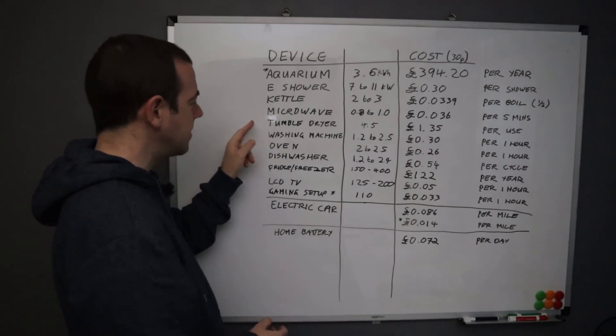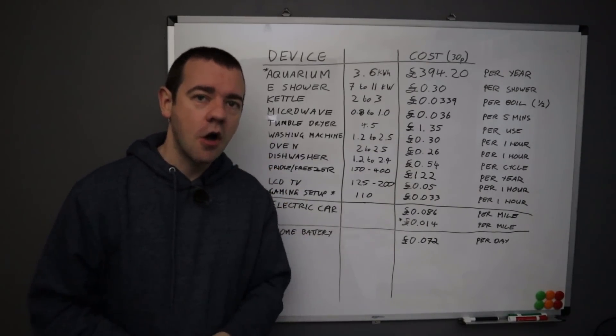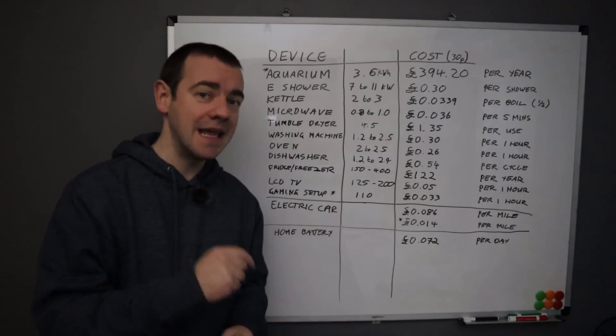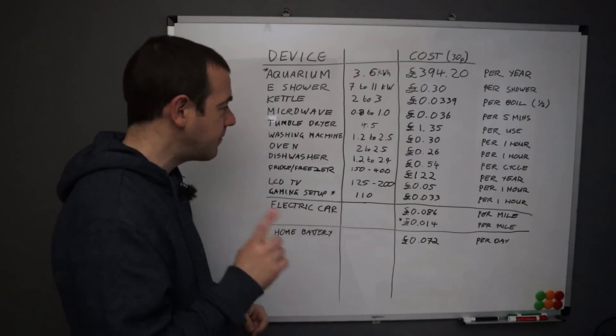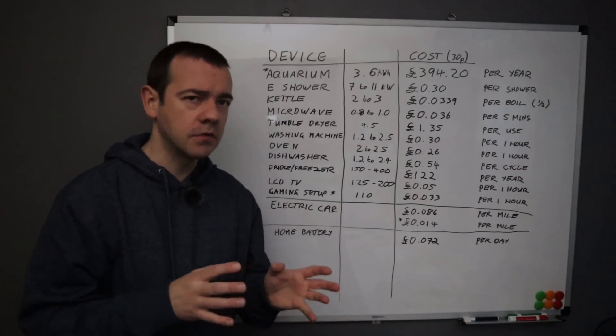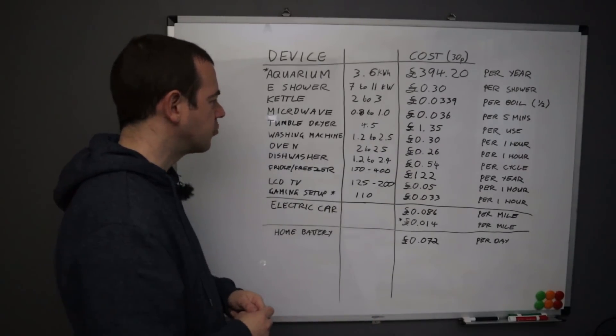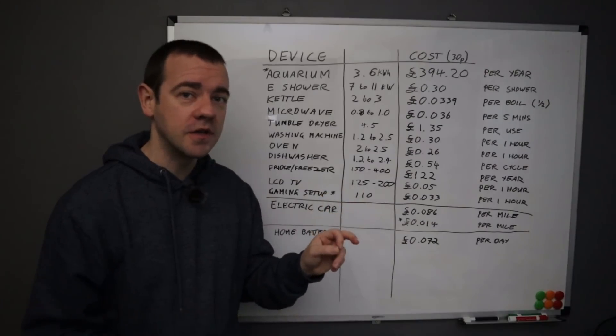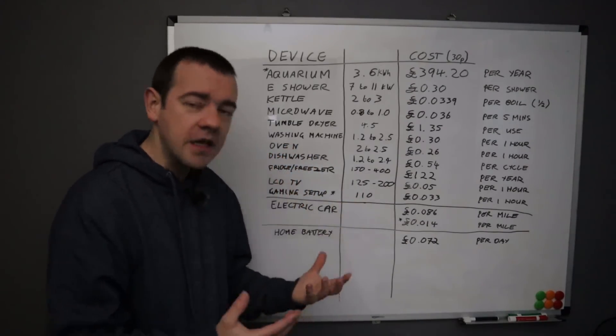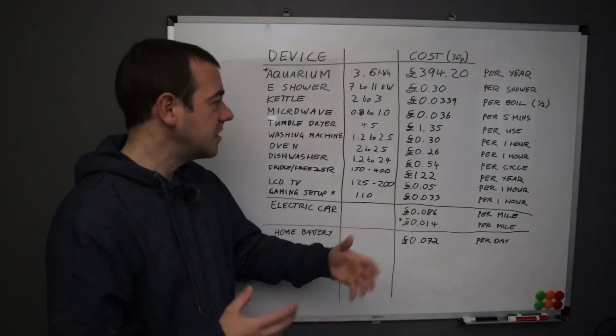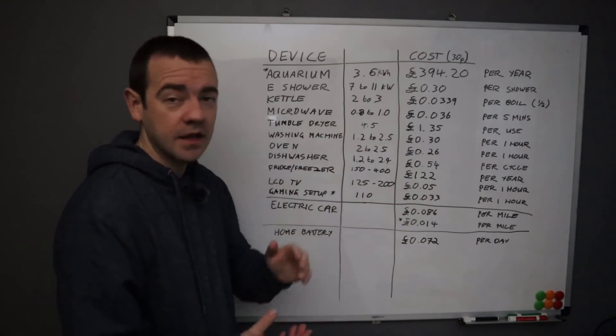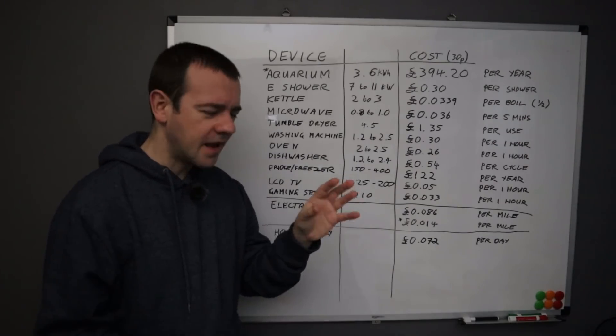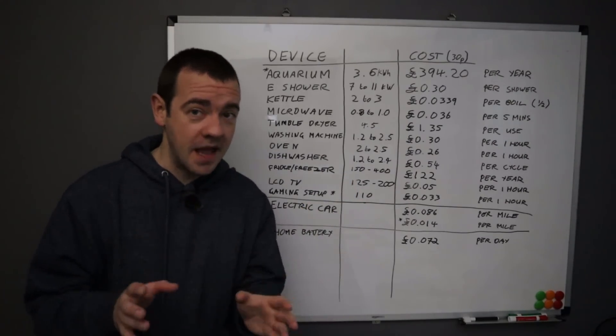Now the tumble dryer, this is the greedy guts of the house typically. And this is based on a normal tumble dryer, not one that has a heat pump involved. They typically use about half of a normal or traditional tumble dryer. But yes, four and a half kilowatt hours for a traditional non-eco mode use. So each time you use your tumble dryer, four and a half kilowatts, which is at 30 pence, £1.35.